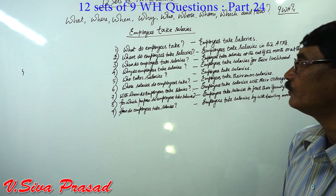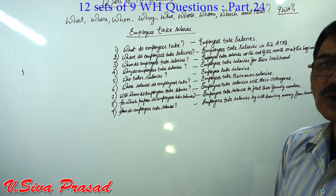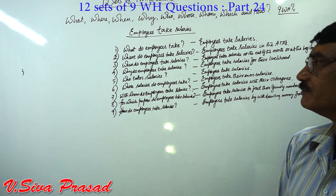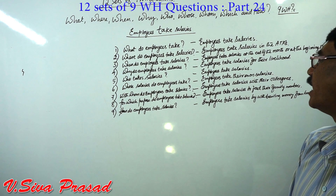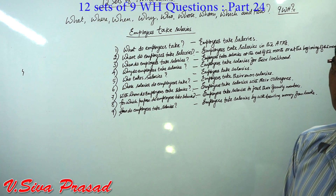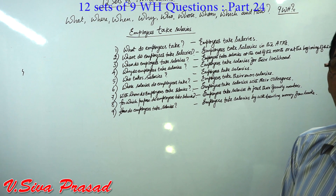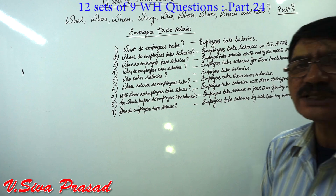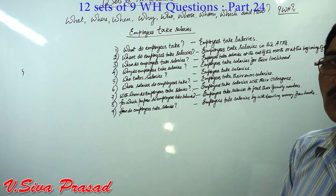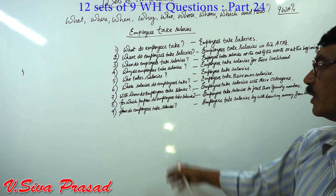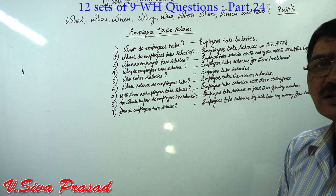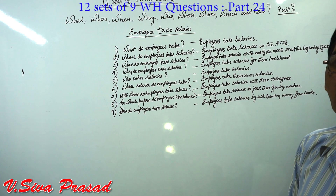Set 9 — Future Perfect: What will employees have taken? Employees will have taken their salaries. Where will employees have taken salaries? Employees will have taken salaries in the ATMs. When will employees have taken salaries? Employees will have taken salaries at the end or at the beginning of the month. Why will employees have taken salaries? Employees will have taken salaries for their livelihood. Who will have taken salaries? Employees will have taken salaries. Whose salaries will employees have taken? Employees will have taken their own salaries. With whom will employees have taken salaries? Employees will have taken their salaries with their colleagues. For which purpose will employees have taken salaries? Employees will have taken salaries to feed their family members. How will employees have taken salaries? Employees will have taken salaries by drawing money from the banks.